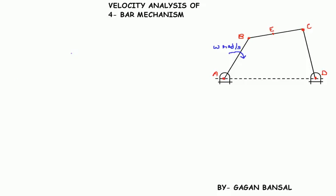Hello everyone. In this session we will be discussing velocity analysis of a 4-bar mechanism. Consider a 4-bar mechanism ABCD in which link AB is rotating with angular velocity omega radians per second, and at an instant AB is making an angle theta with the horizontal.